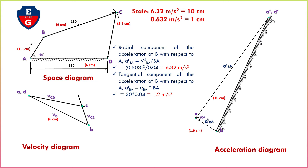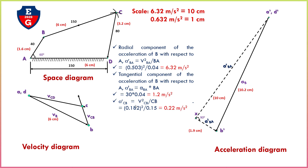Now join A dash to B dash — this is called the acceleration of point B. From measurement, this value is 10.2 centimeters. Now consider link BC. Find the radial component: V squared CB divided by CB. From the previous video, this equals 0.182 squared divided by the length of BC which is 0.15. From this, the radial component A R CB equals 0.22 meter per second square.